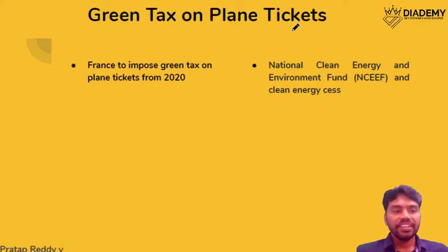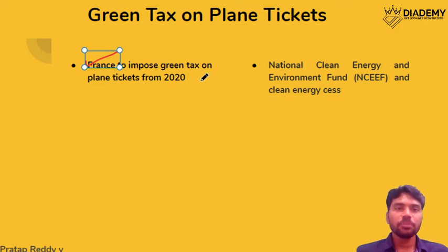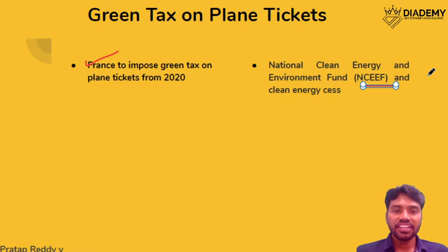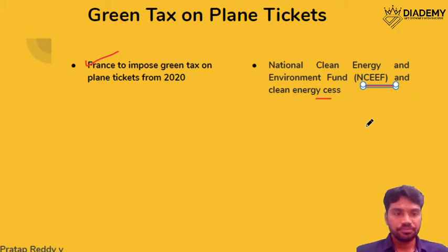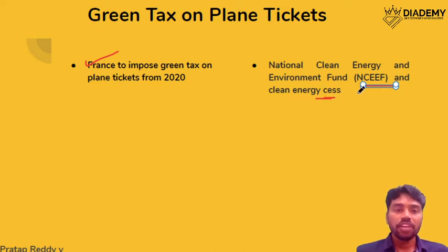Green Tax on plane tickets: France has imposed this from 2020. The funds collected from these taxes will be utilized for green projects. In India, we have the National Clean Energy and Environment Fund, which comes from the clean energy cess imposed on coal generation. This is also in the news because the government is planning to remove this cess.